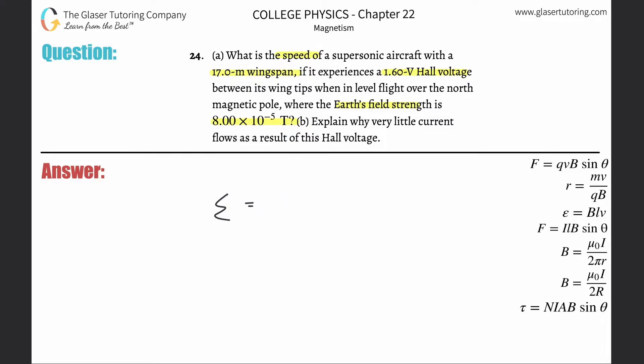This is going to be the magnetic field multiplied by the length, which is essentially the diameter, which in this problem is going to be the distance between the wingtips—the wingspan—multiplied by the velocity.